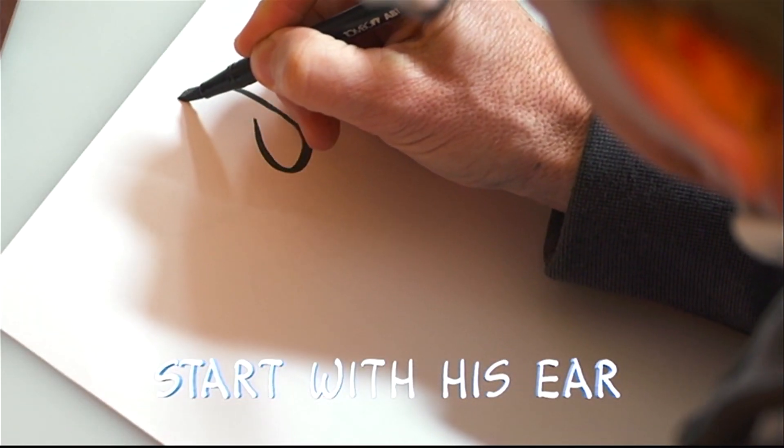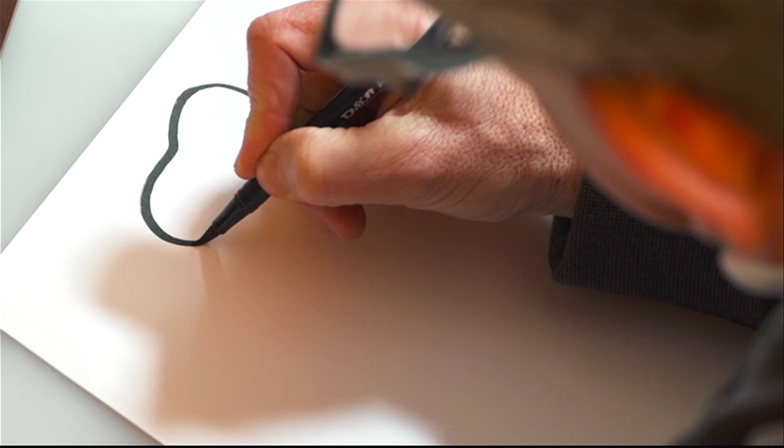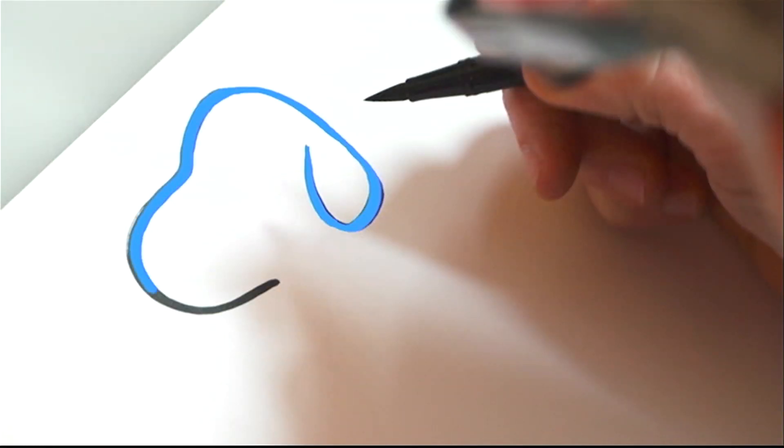First, I'm going to draw his ear and then around the top of his head and then around the front of his face. You're going to use long, bold, thick lines.